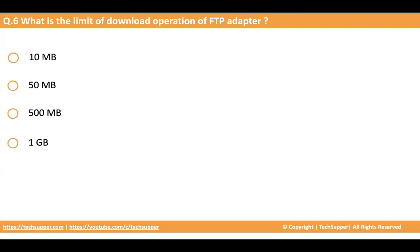The correct answer is 1 GB. In Gen 2 or Gen 3, the read file and write file operations have a limitation of 50 MB. If you have a file on FTP that is greater than 50 MB and you need to read it, instead of using a read file operation you use the download file operation and then read the file in chunks.